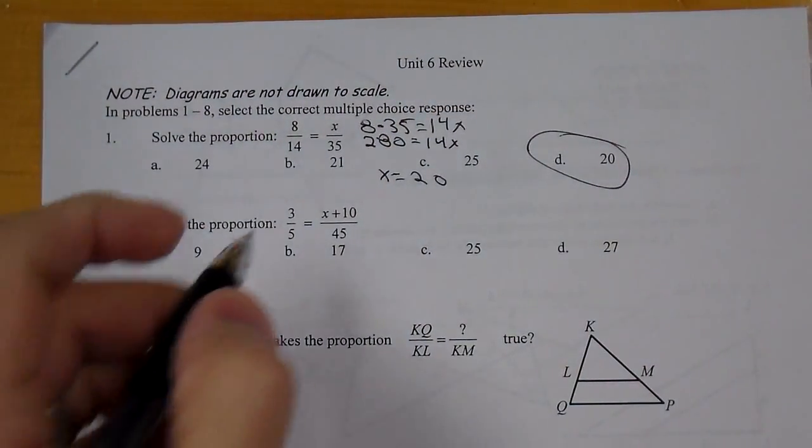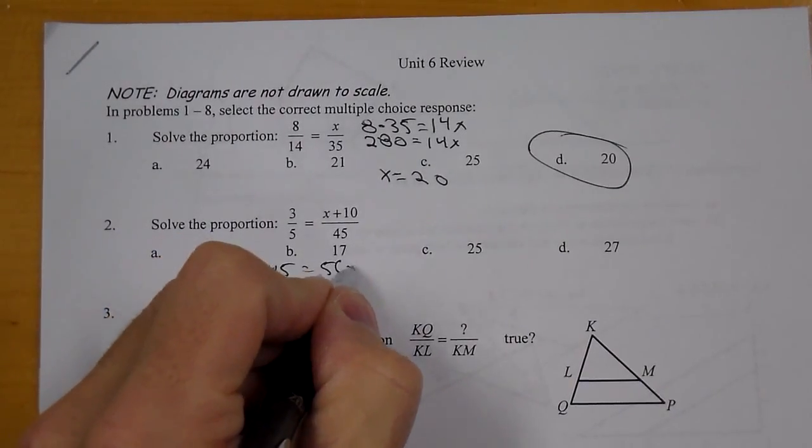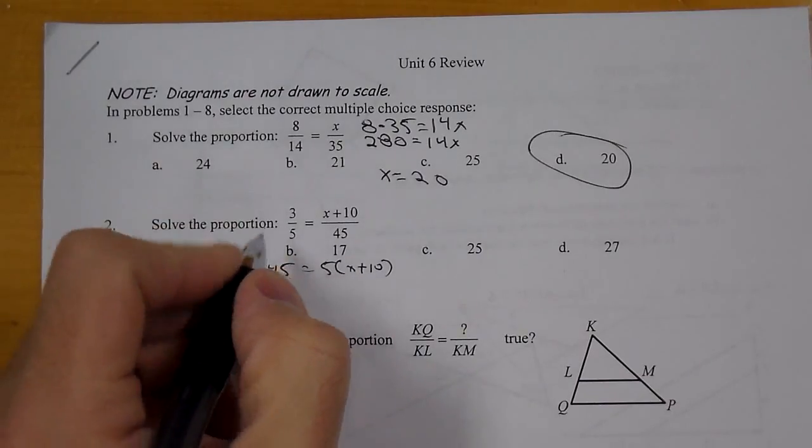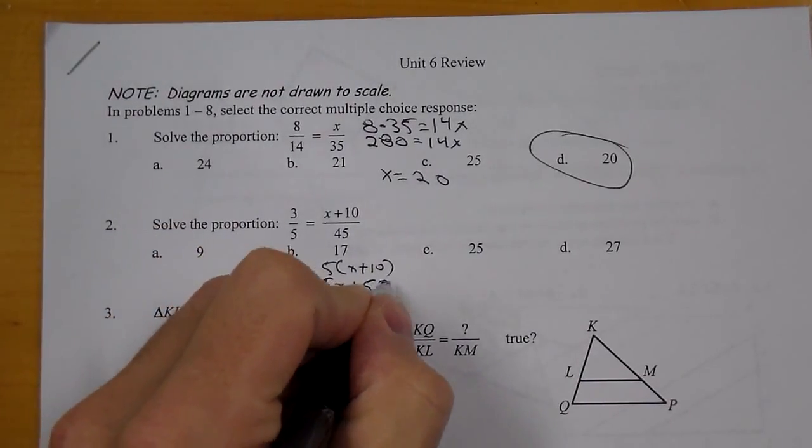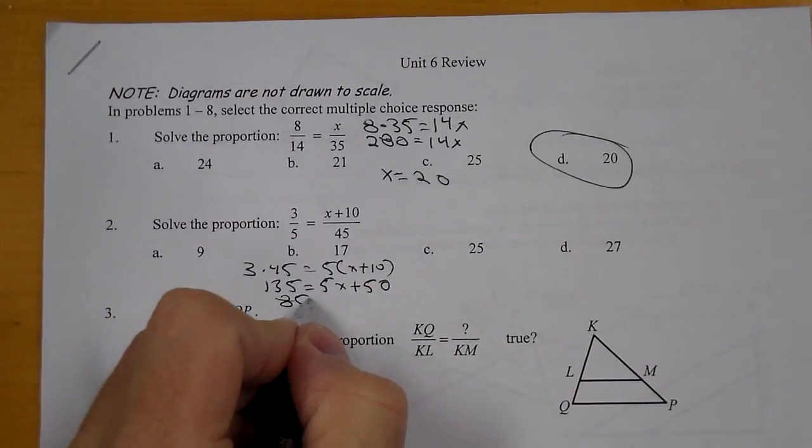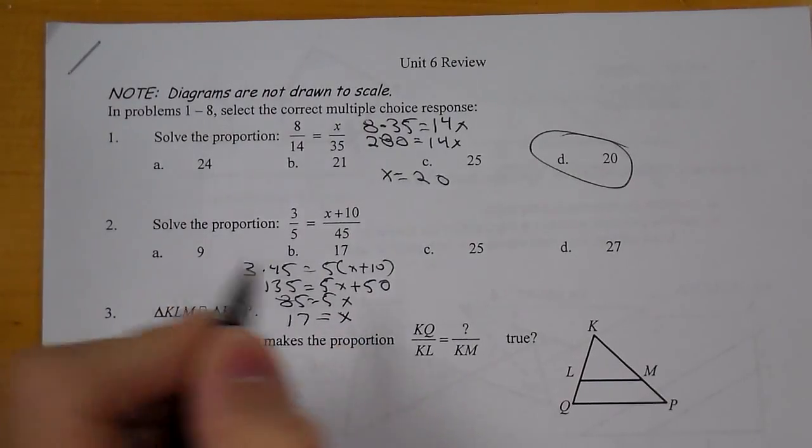For number 2, we could do cross product again. 3 times 45 equals 5 times x plus 10. This comes out to be 135 equals 5x plus 50. Subtract 50 over, we get 85 equals 5x. x comes out to be 17.